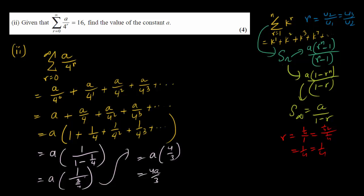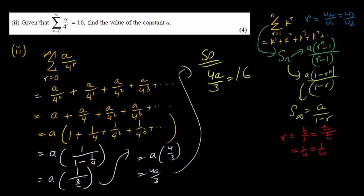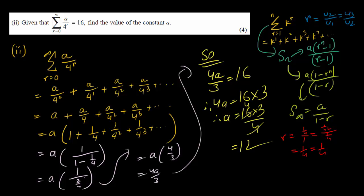We know the whole sum equals 16, so 4a/3 = 16. Therefore 4a = 48, and a = 12.